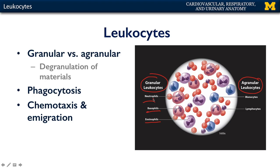The agranular leukocytes include the lymphocytes — so those T cells, B cells, and natural killer cells — and monocytes, those antigen-presenting cells.